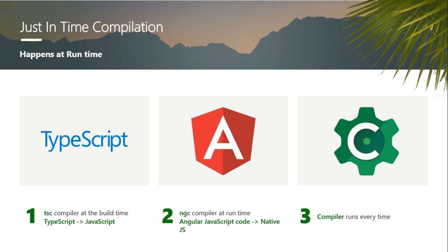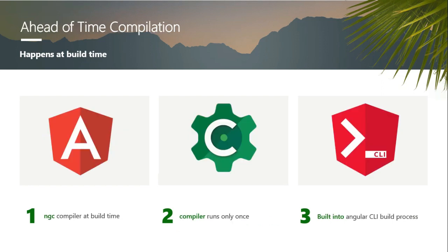Let's look at the AOT compilation process. AOT happens during the build time itself. When we are building packages and deploying to machines or the cloud, the first step is that the Angular compiler compiles those files and produces runnable JavaScript code at build time. The compiler runs only once — during the building of packages. The major advantage is that we do not ship the Angular compiler to the browser, because everything is compiled during build time and those files are exported from the packages.